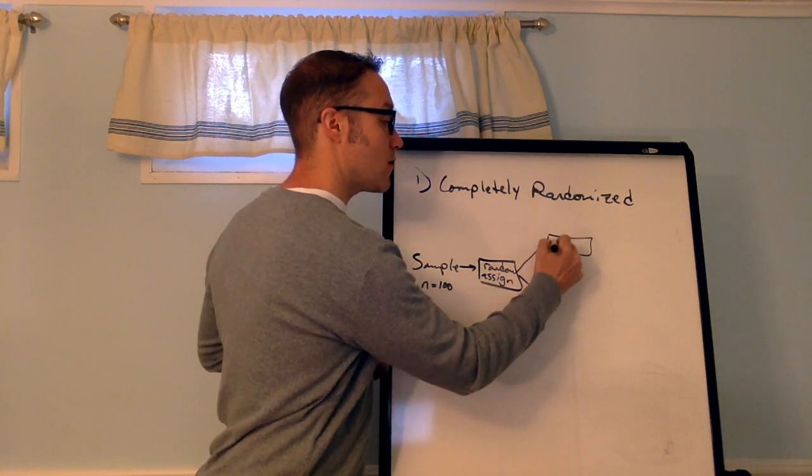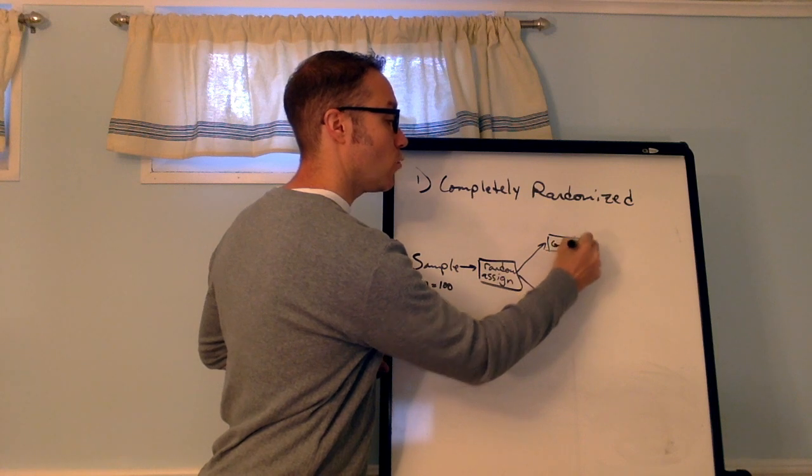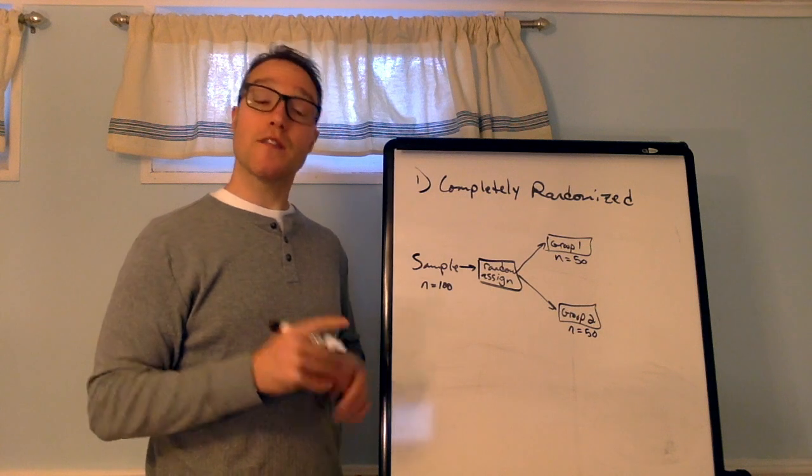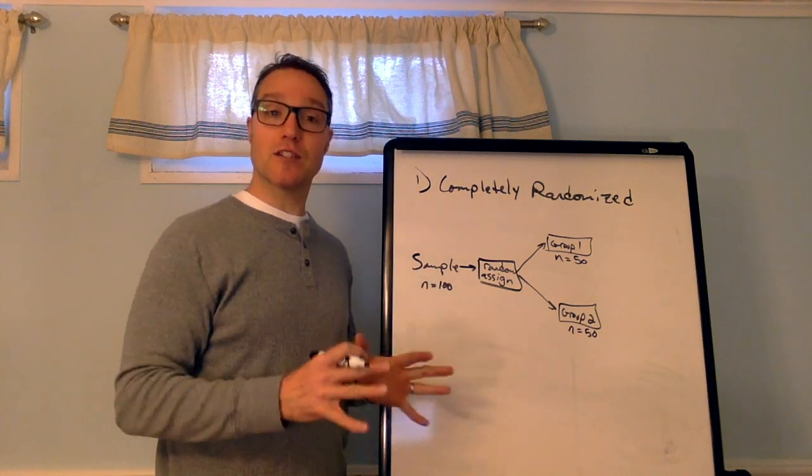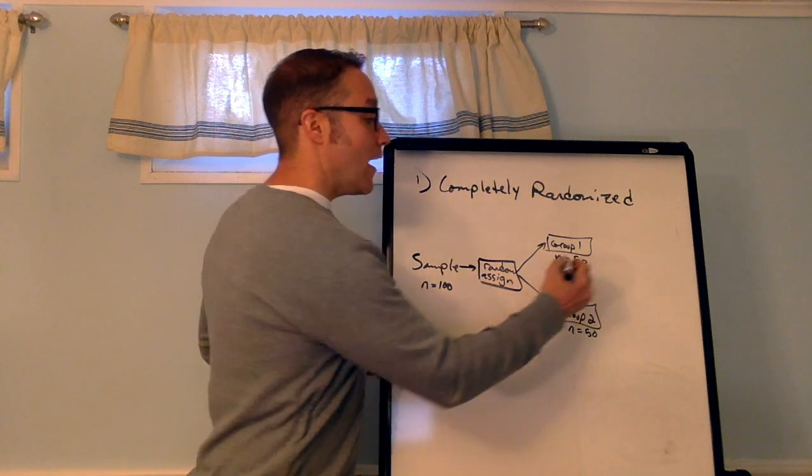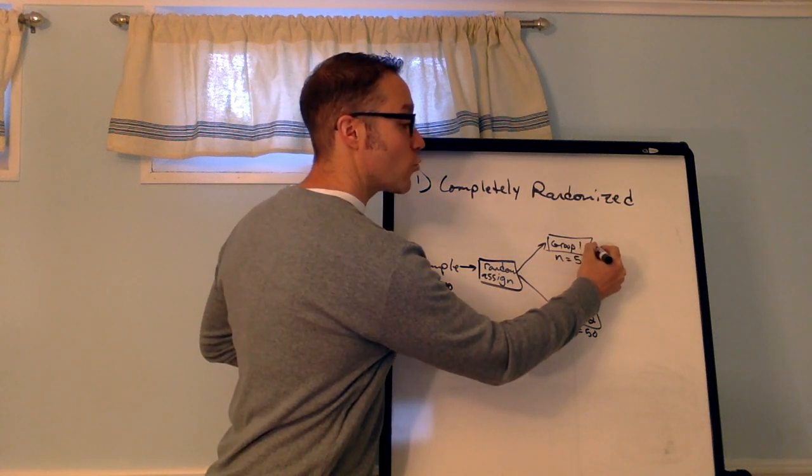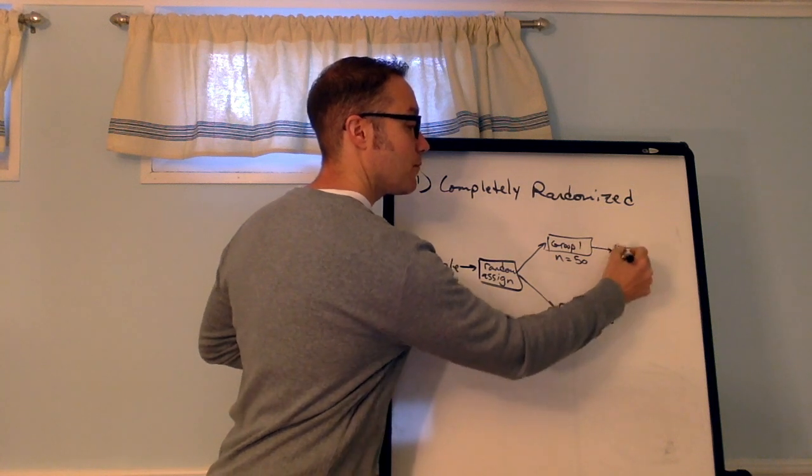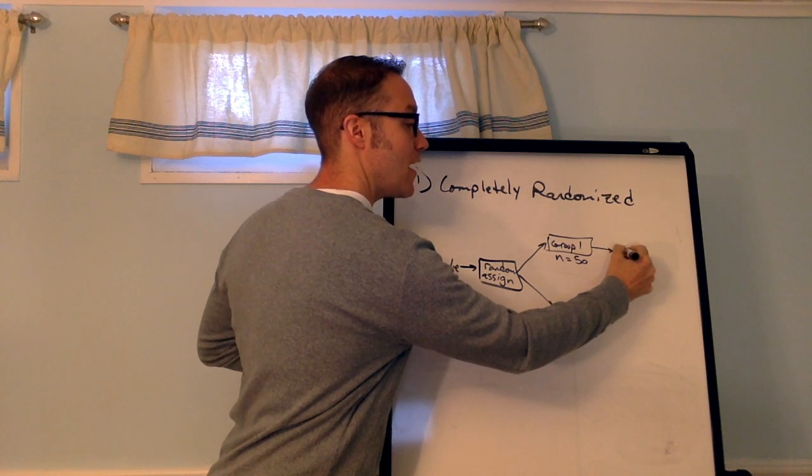So, let's say this is group 1 and this is group 2. You want those numbers to be roughly equal. They don't have to be identical, the same exact number, but they should be close. And then you want to randomly assign the treatment.